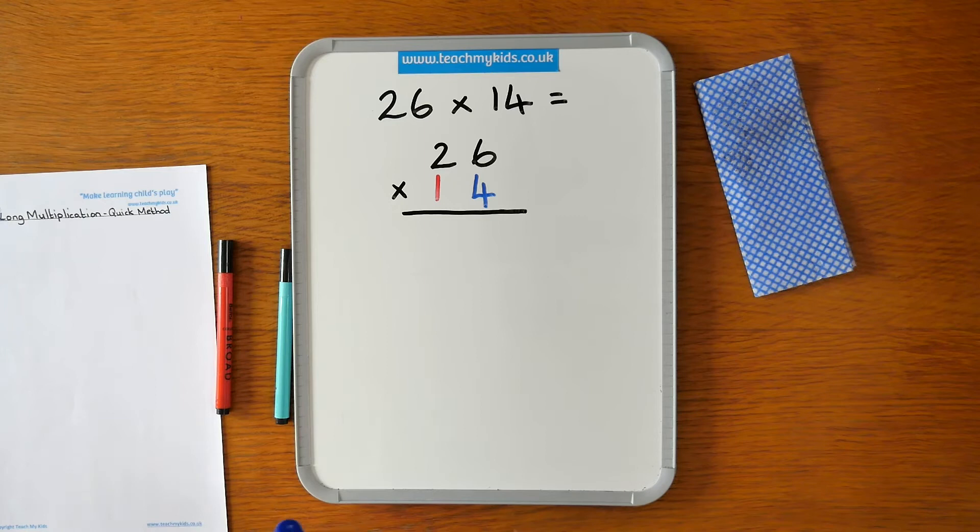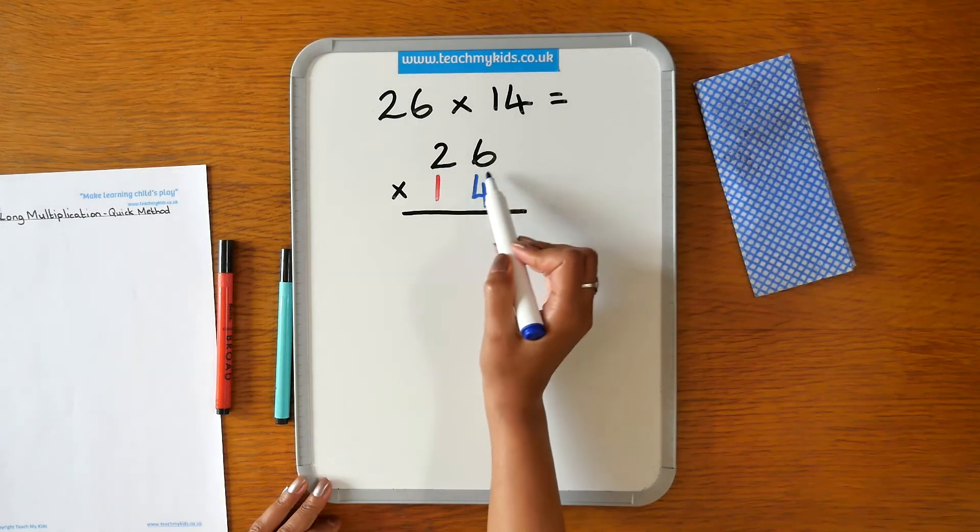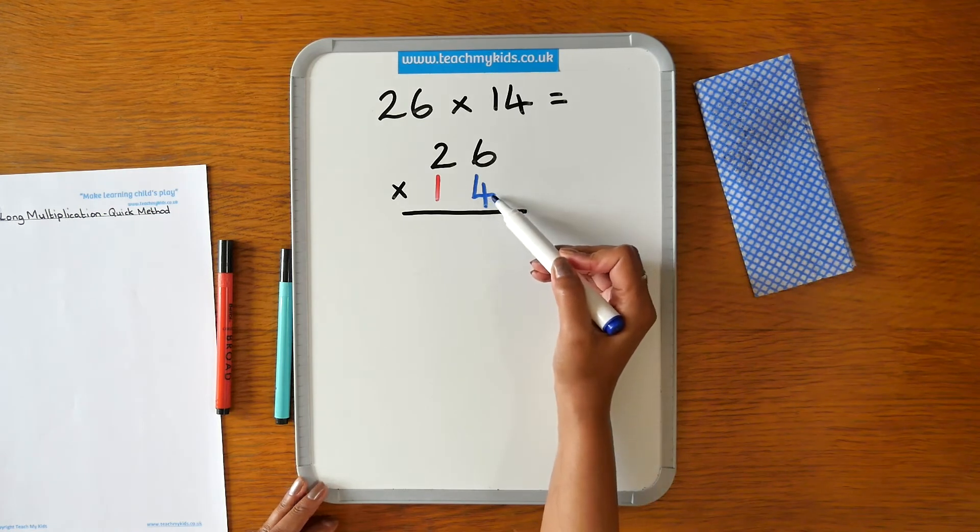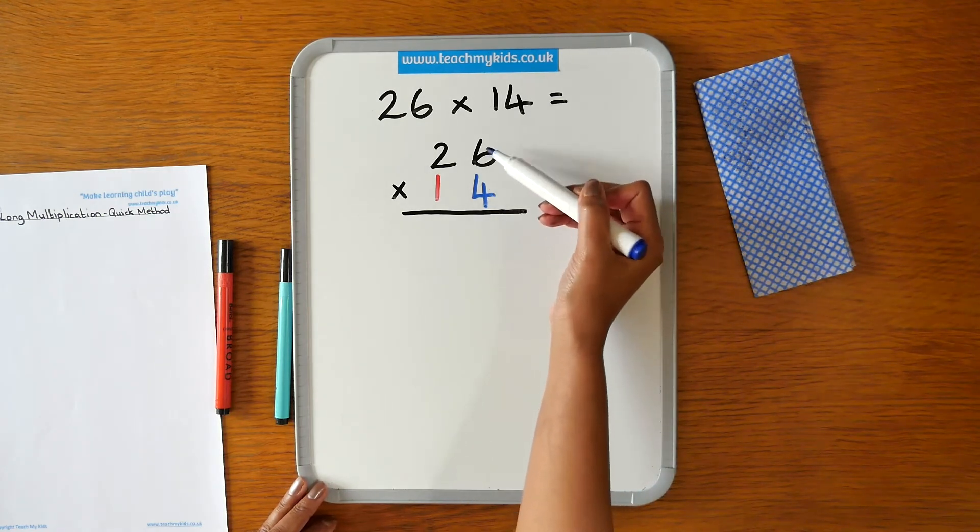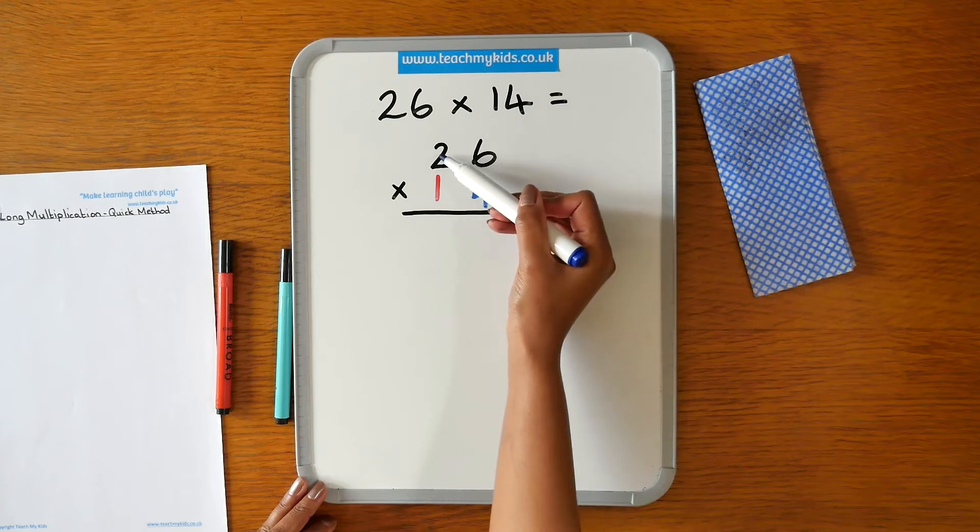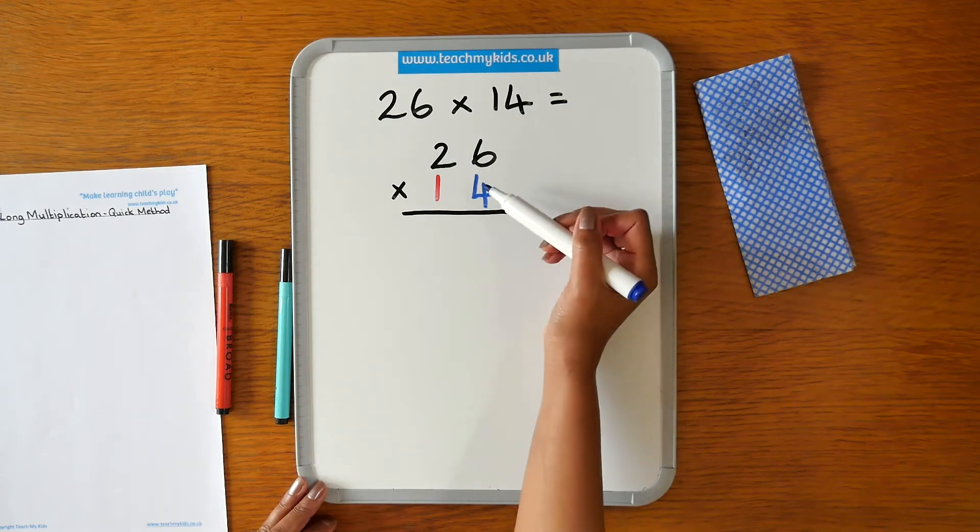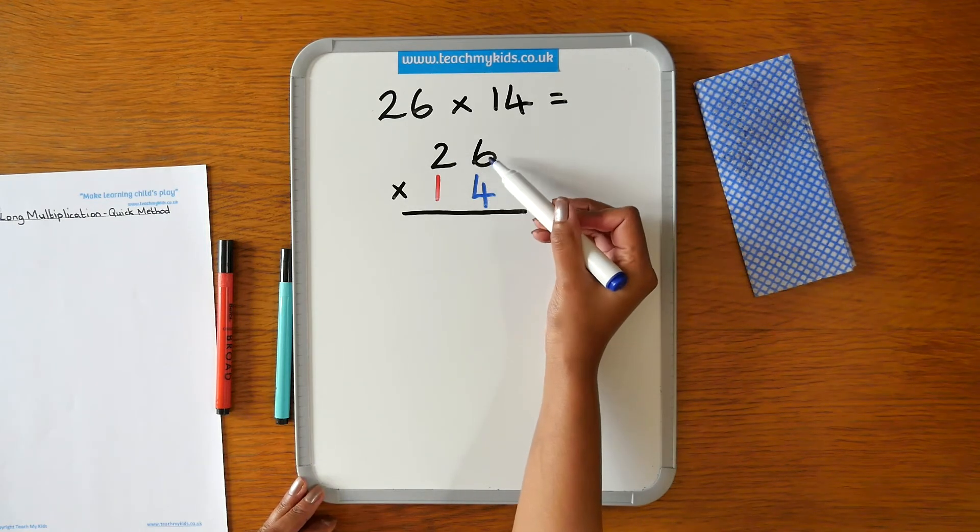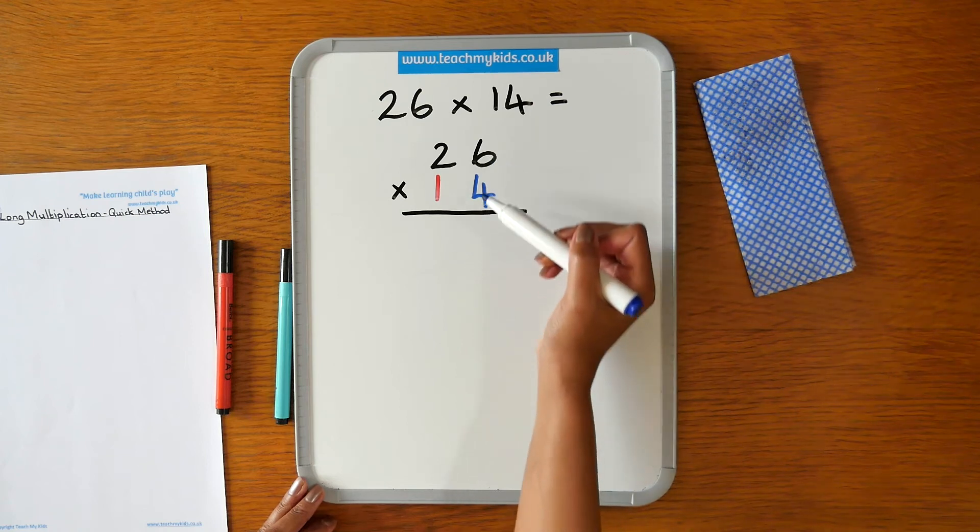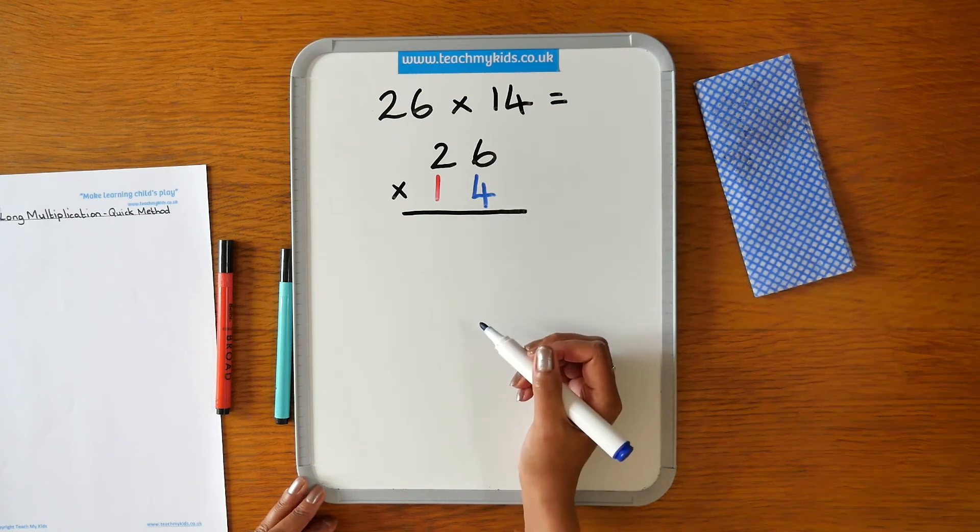The first step is to multiply the top number by the 4. We multiply the units first and then the tens. So we begin with 4 times 6. 4 times 6 is 24.